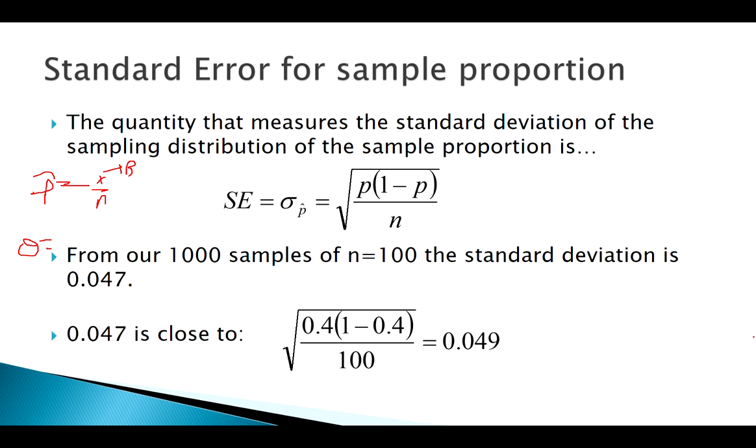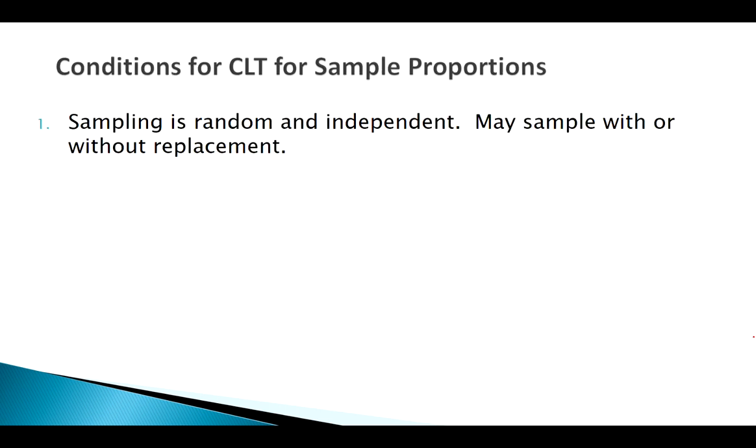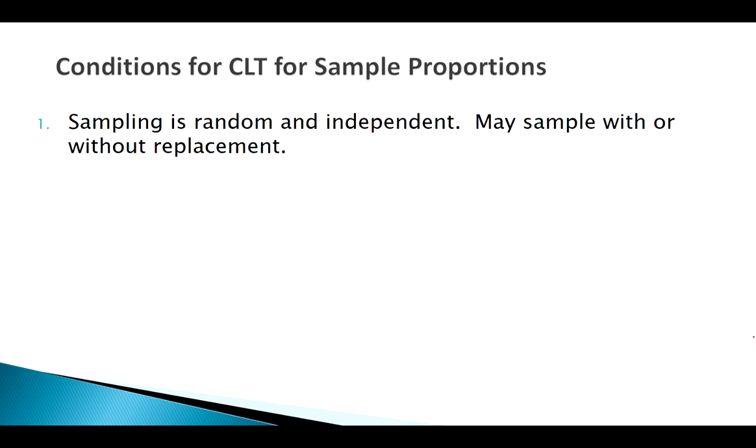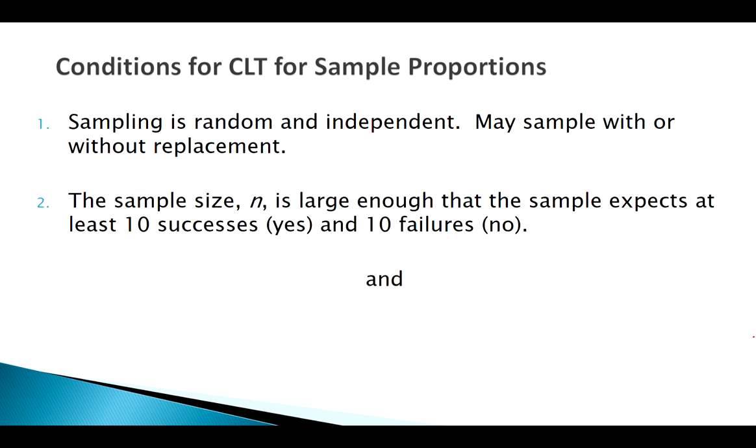So what conditions do we have to meet? We know as n gets bigger, things turn normal. But hopefully you're recalling a lot back to the binomial here. Remember the conditions we had to meet in order to use our normal approximation?